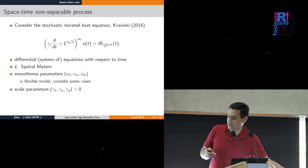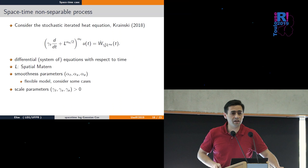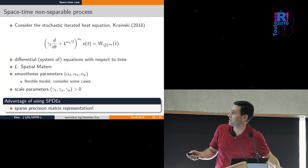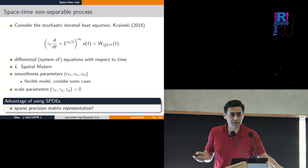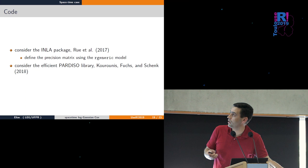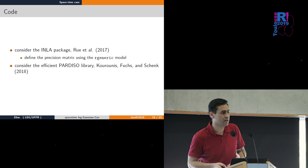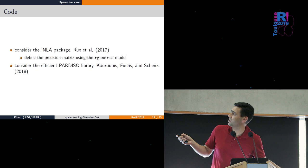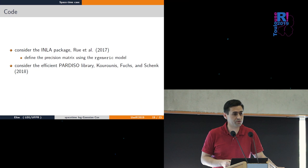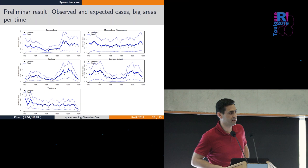Consider this stochastic iterated heat equation I've been working with. It's from physics, but the good point is it allows computation with sparse precision matrices - a huge benefit. We can implement this in INLA using the generic framework. There's also the PARDISO library which deals with very fast parallel decomposition of sparse precision matrices.